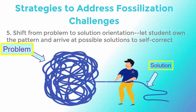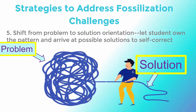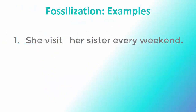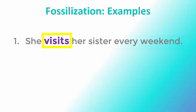Shift from a problem to a solution orientation — let the student own the pattern, unravel the issue, and arrive at possible solutions to self-correct. Look at this example of a common fossilization from the previous activity: 'She visit her sister every weekend.' The correction is adding an 's' to the verb in the third-person singular present tense.